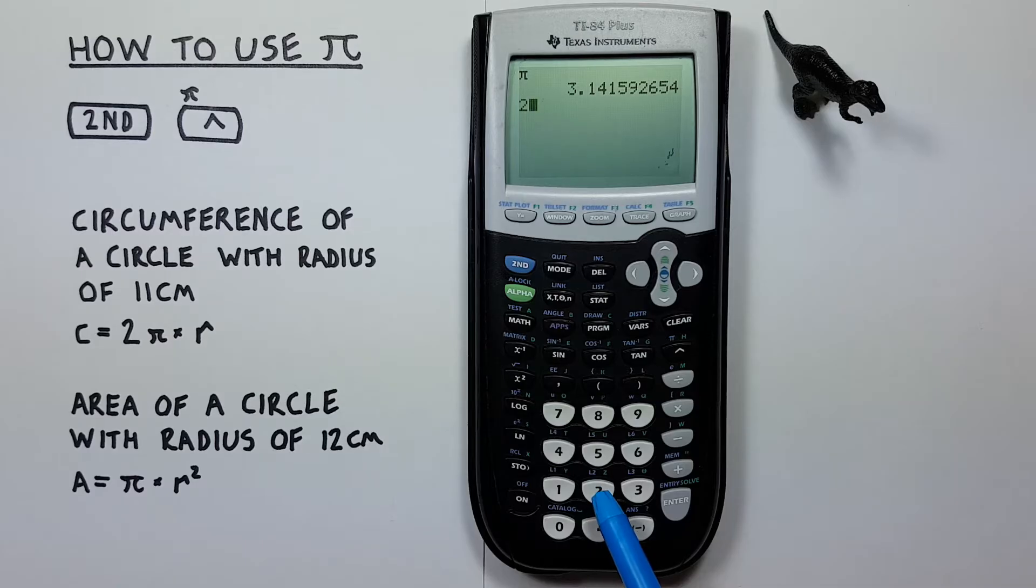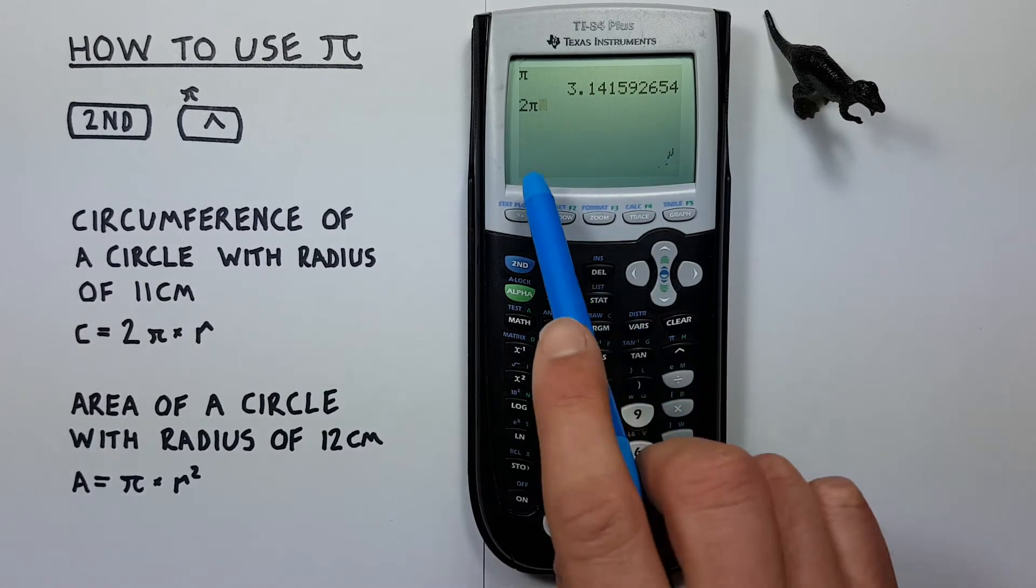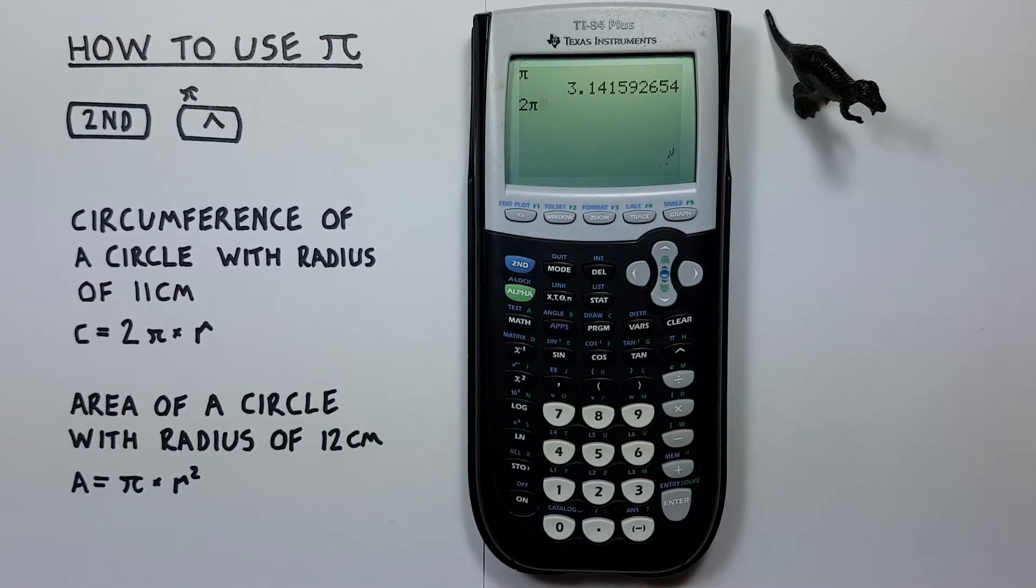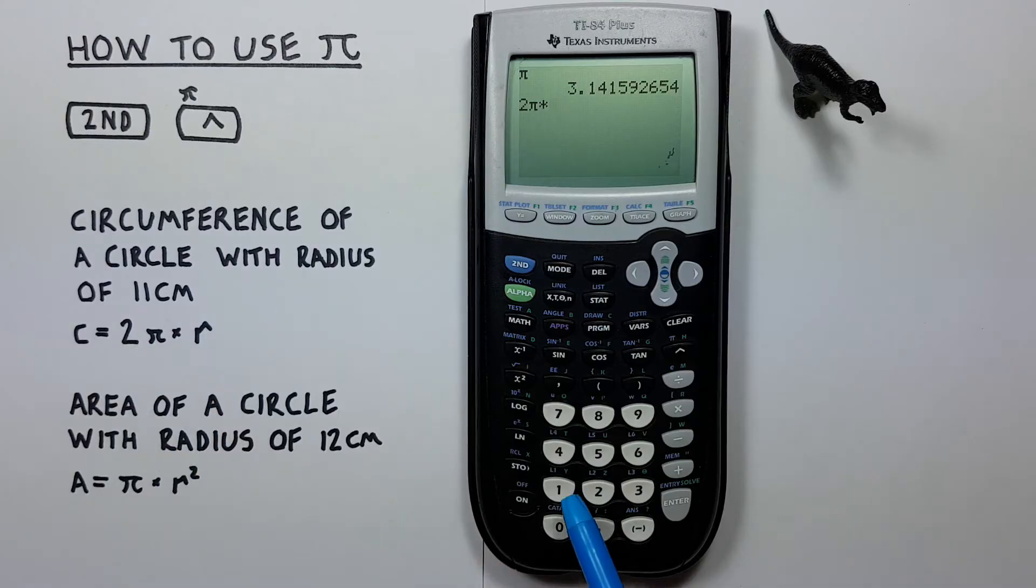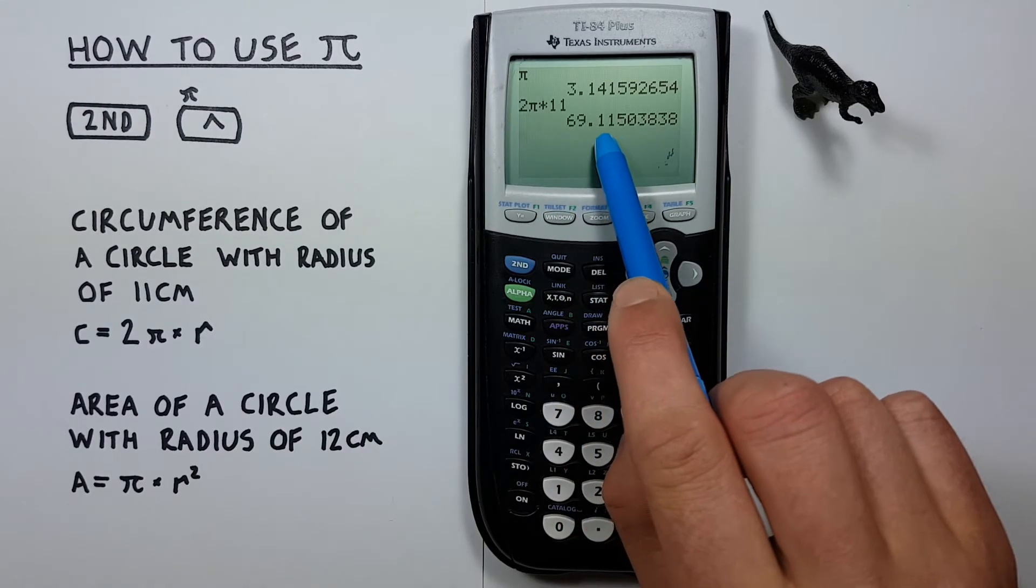We would start by entering the 2 and then the PI symbol with the second function exponent key. There we go. 2 and then times our radius which was 11 centimeters. And we see we get a circumference of 69.115.